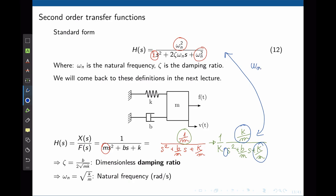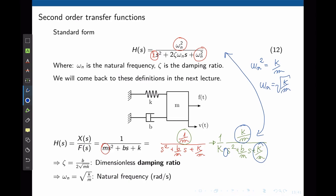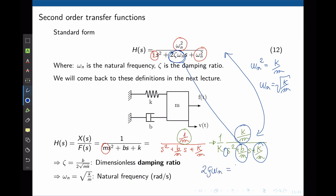The natural frequency is ωn = √(k/m). From 2ζωn = b/m and ωn = √(k/m), after simple manipulation, the damping ratio is ζ = b/(2√(mk)). We'll return to these definitions in lecture 5.